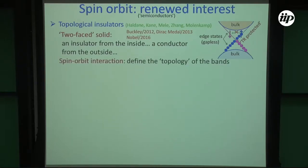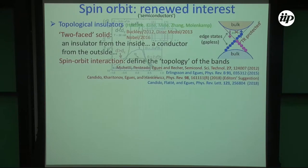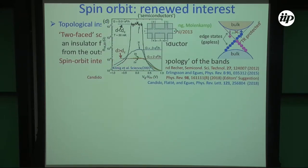Spin-orbit is very important in the way we define band topology. Topology is not really necessary — you can get away with just simple k·p theory to explain everything. But the spin-orbit interaction is right there, and we've been working on this for some time. This is actually the first experimental realization in the literature by the group of Laurens Molenkamp, where you can see this 2e²/h, which is essentially counting the number of channels. These are helical states.